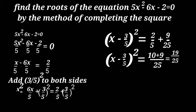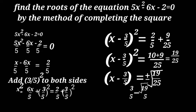x - 3/5 = ±√(19/25). Then, x = 3/5 ± √19/5. So,